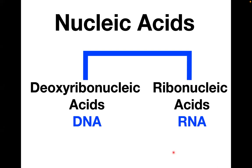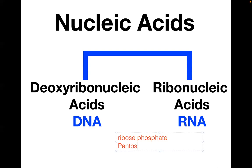Let's begin with the concept of nucleic acids. We have two types: DNA, which stands for deoxyribonucleic acid, and RNA, which stands for ribonucleic acid. The biochemical pathway that provides the ribose phosphate utilized for DNA and RNA synthesis is the pentose phosphate pathway, also known as the hexose monophosphate shunt.